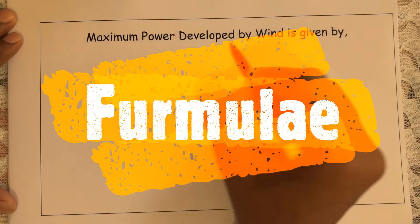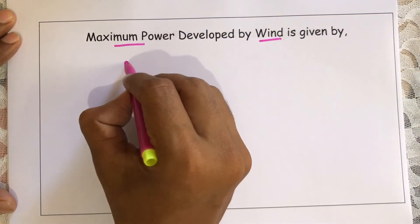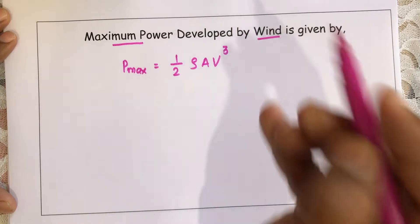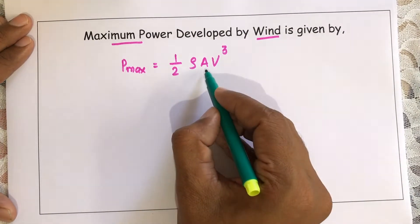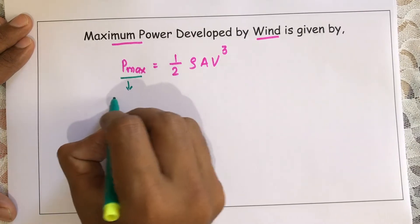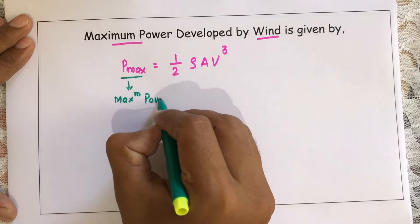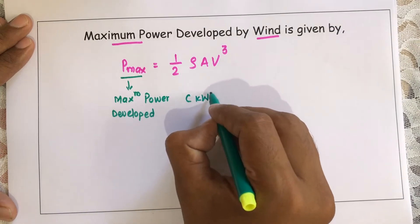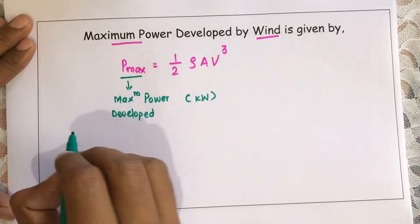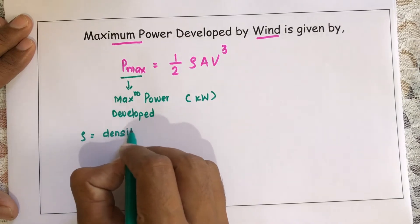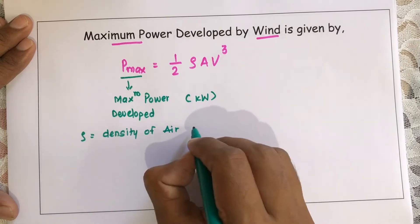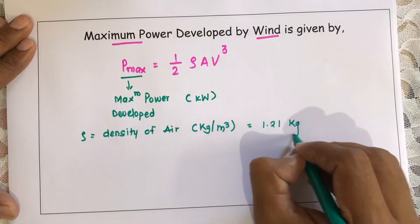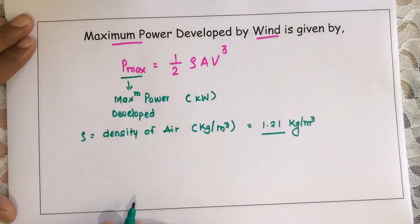The maximum power developed by the wind is given by P_max = ½ρAV³. P_max is the maximum power developed, with units of kilowatt or watt. Rho (ρ) is the density of air, with units of kg per meter cube, and its general value is 1.21 kg per meter cube if not given in the numerical.